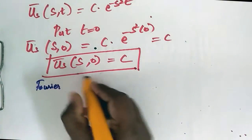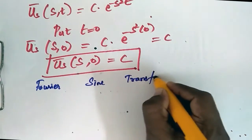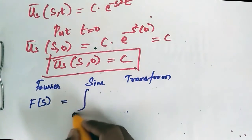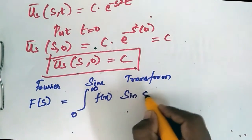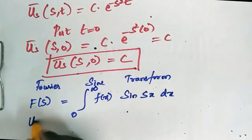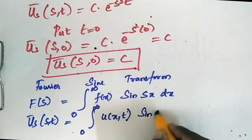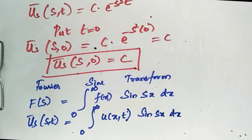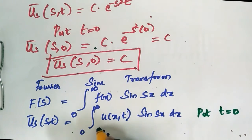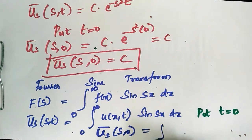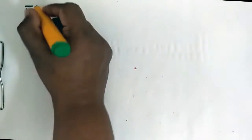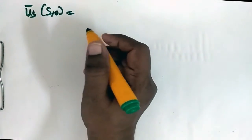Using the Fourier Sine Transform definition: ū_s(s, t) = ∫₀^∞ u(x, t) sin(sx) dx. Putting t = 0: ū_s(s, 0) = ∫₀^∞ u(x, 0) sin(sx) dx. Now we split the limits based on the initial condition.